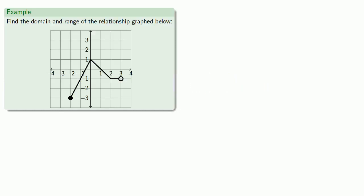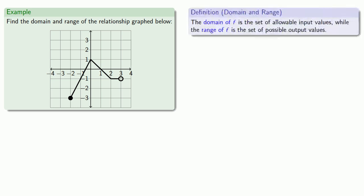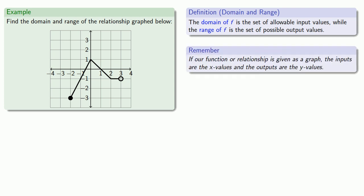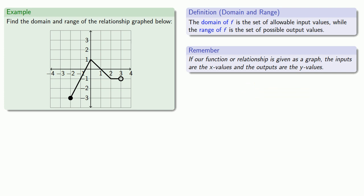For example, find the domain and range of the relationship graphed. Definitions are the whole of mathematics, all else is commentary. We'll pull in our definition of domain and range. Since we're given a graph of our relationship, our domain — our inputs — are going to be the x values, and our outputs are going to be the y values. So let's start with the domain: the domain is the set of x values, and if we look at this graph, we see the following.